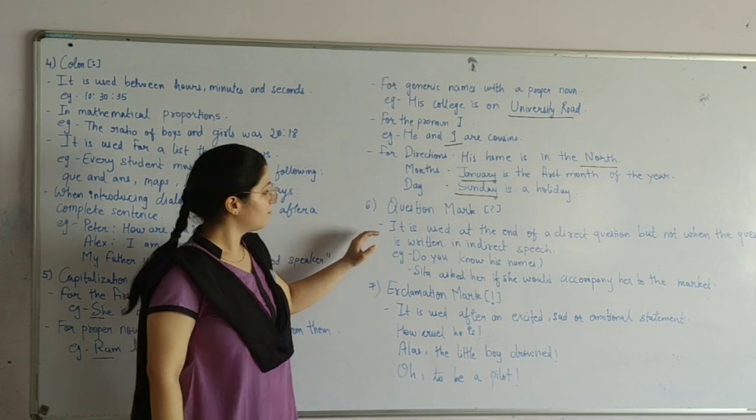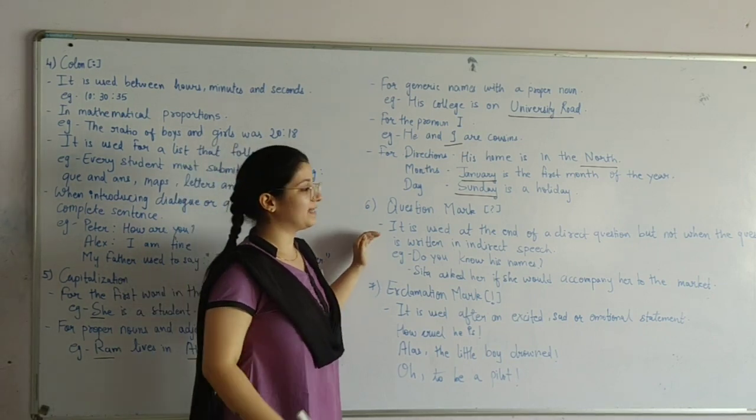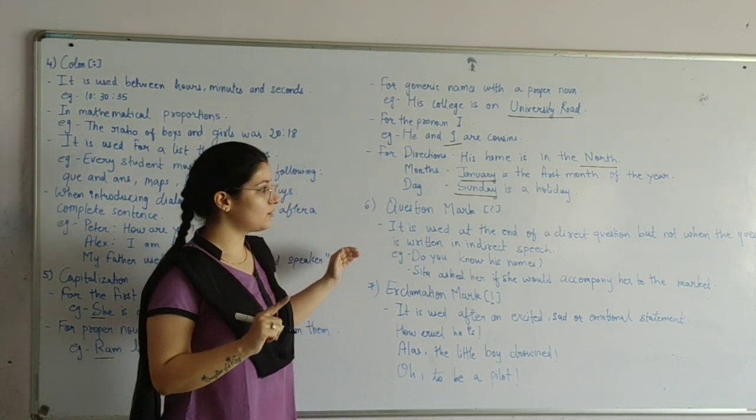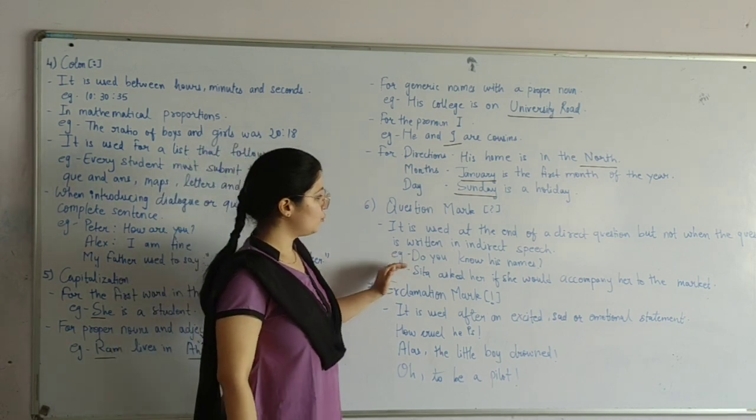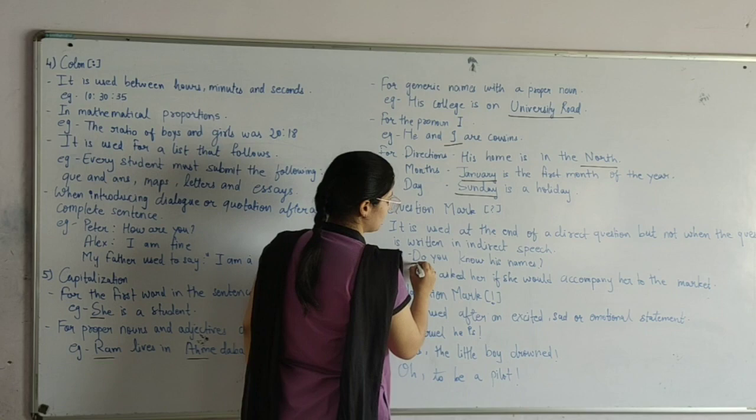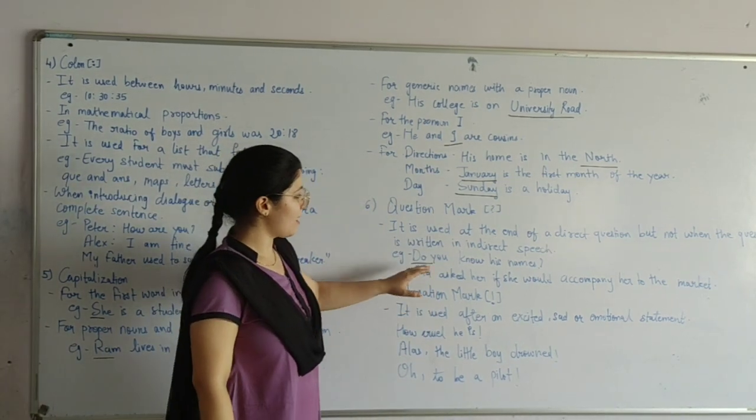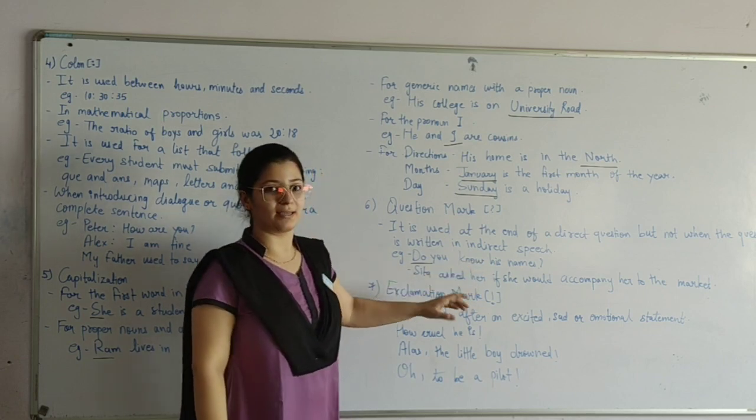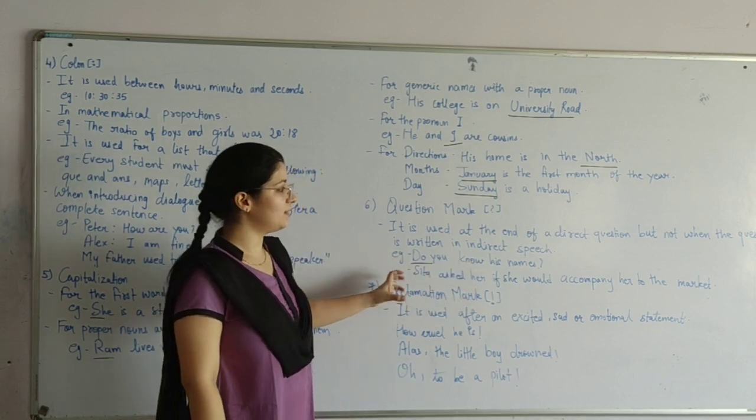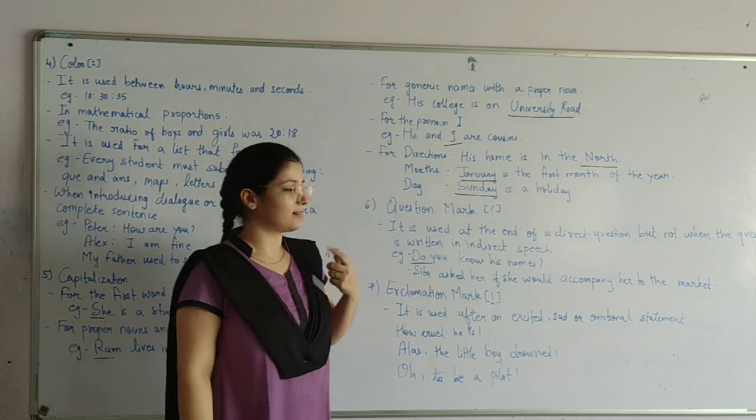Next, number six is question mark. It is used at the end of the direct question, but not when the question is in indirect form. For example, do you know his name? This is direct question. For example, Sita asked her if she would accompany her to the market. This is indirect question. In that, we will not add question mark at the end of the sentence.